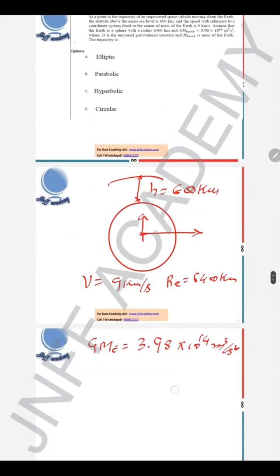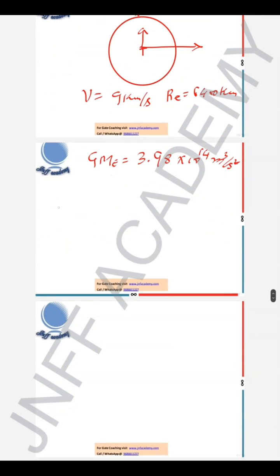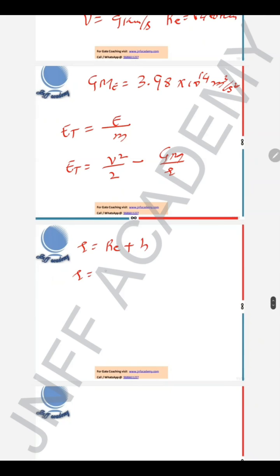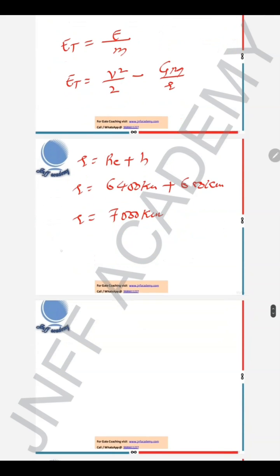We need to find the trajectory, which can be determined from the total orbital energy per unit mass: E_t = v²/2 − GM/r. Here r = radius of Earth + altitude = 6400 + 600 = 7000 kilometers. If E_t < 0, the trajectory is an ellipse; if E_t = 0, it is a parabola; if E_t > 0, it is a hyperbola.